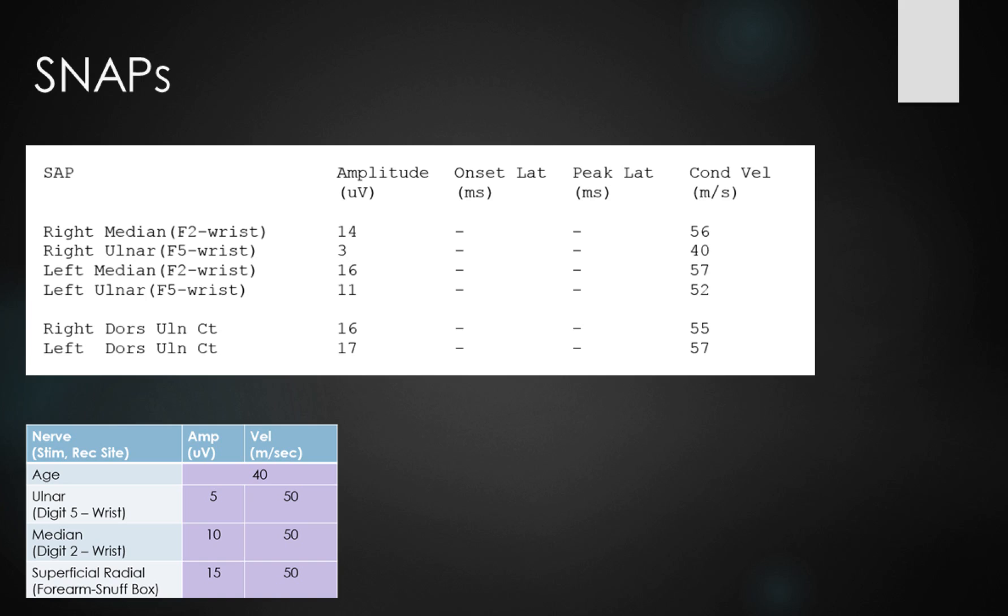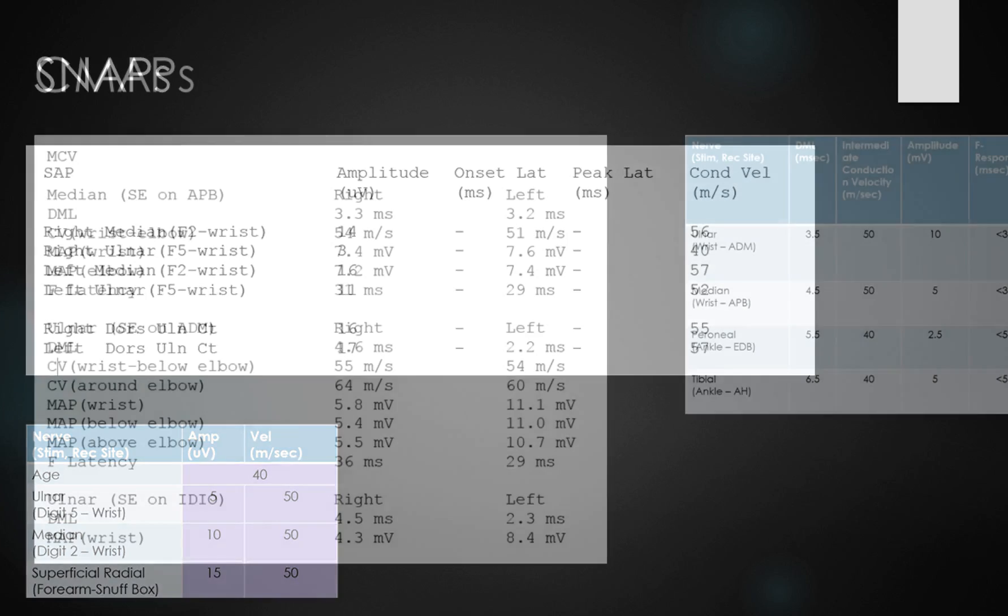If we have a look on the other side, the other ulnar sensory response, we see that's 11 microvolts and 52. So it's clearly reduced in size and amplitude, and also somewhat slowed. The left median F2 response is normal and symmetrical to the right-hand side. So far, we can see a reduction in the right ulnar finger 5 sensory response with a little bit of conduction velocity slowing. I've also studied the right dorsal ulnar cutaneous sensory response, which is very normal at 16 and 55, and symmetrical to the other side.